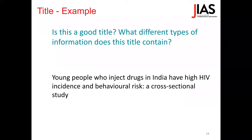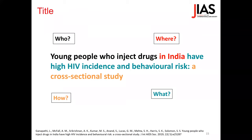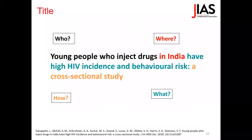Let's look together at an example: 'Young people who inject drugs in India have high HIV incidence and behavioral risk — cross-sectional study.' This title was published in our journal this year. It responds to four key questions: who are the targets of the study (young people who inject drugs), where was the study run (India), what is the topic (high HIV incidence and behavioral risk), and how did the authors address this topic (cross-sectional study). These four questions must always be responded to in a good title, and you don't necessarily need to give away your results.